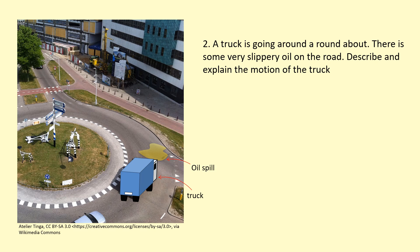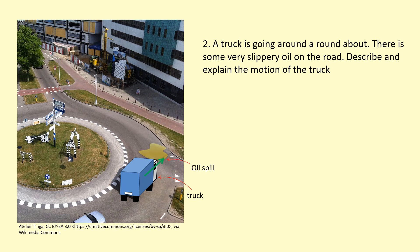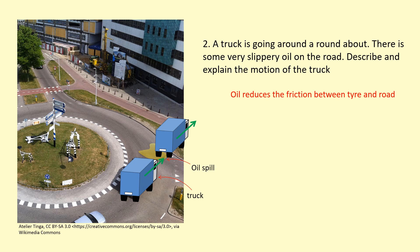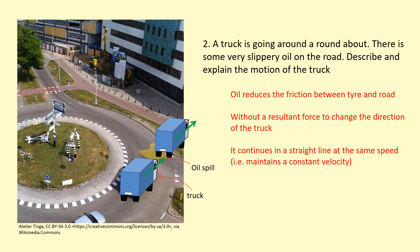In our second example, a truck goes around a roundabout with slippery oil on the road. Without oil, friction between the tire and the ground provides the resultant force needed to change the truck's direction. With oil, the friction is gone, so there is no resultant force to change the truck's direction. The truck just maintains its velocity — continuing in a straight line at the same speed.